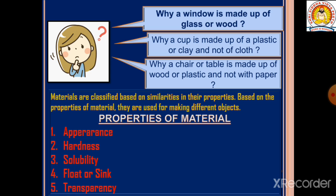Why is a chair or table made from wood or plastic and not with paper? Let's find out the answers to these questions. Materials are classified based on similarities in their properties, and based on those properties, they are used for making different objects.